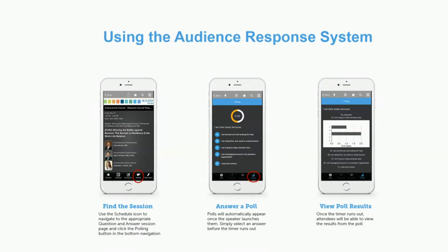Please do the evaluation right after the course before leaving the room through the AUA mobile app or by visiting aua2019.org. There will also be a post-test sent out within 24 to 48 hours to test your retention. If you complete the post-test survey, there will be a random drawing for a $150 Visa gift card.